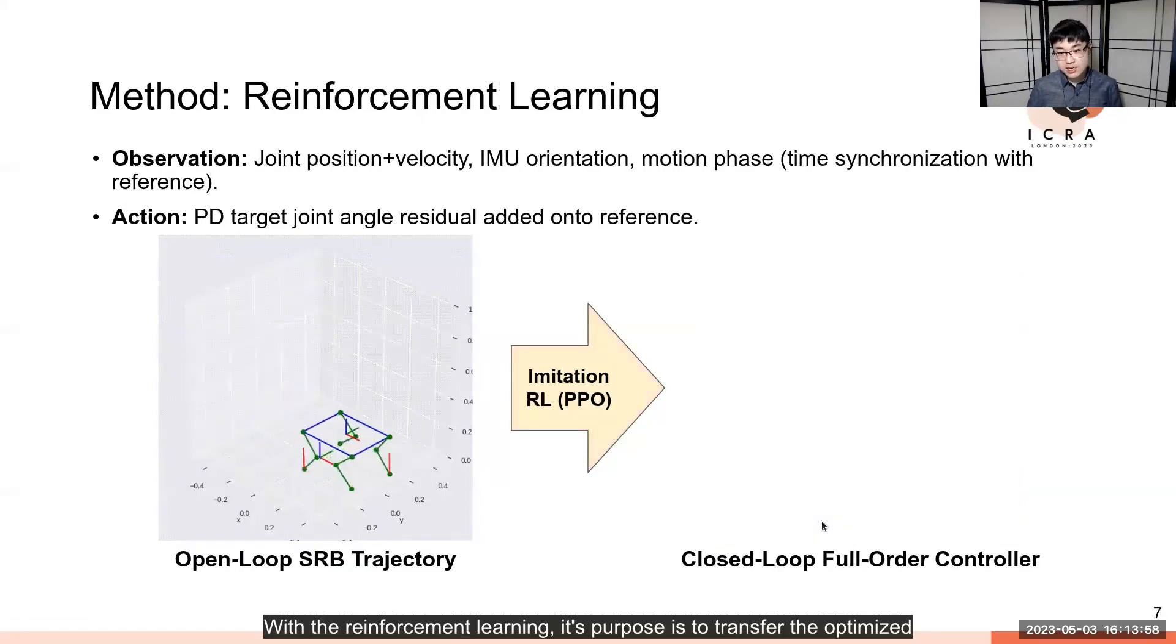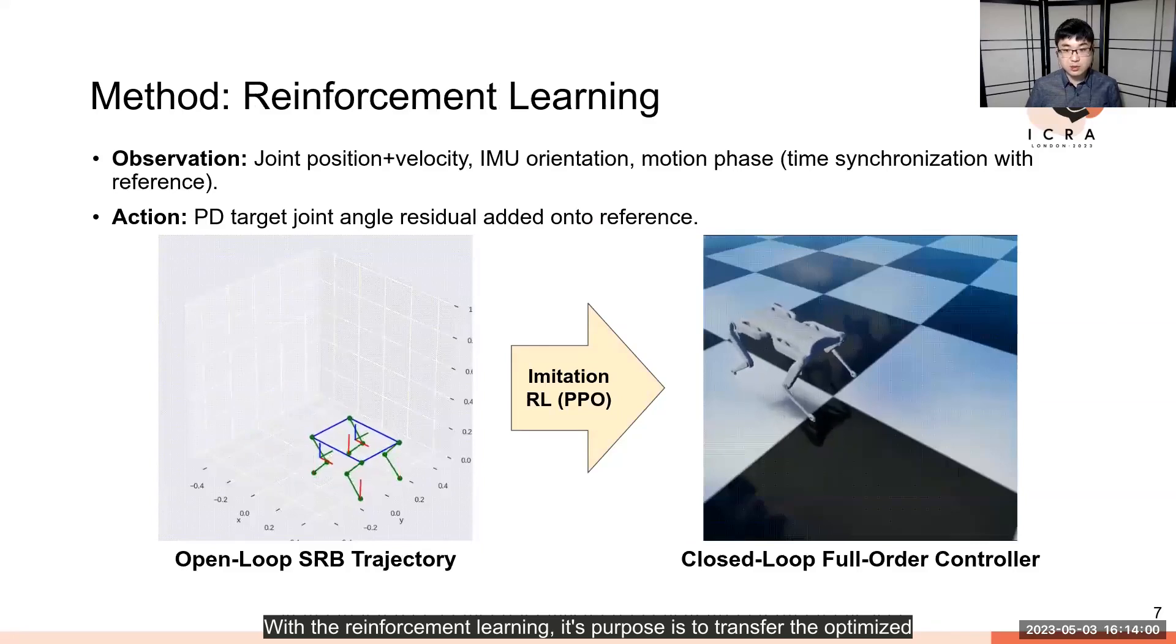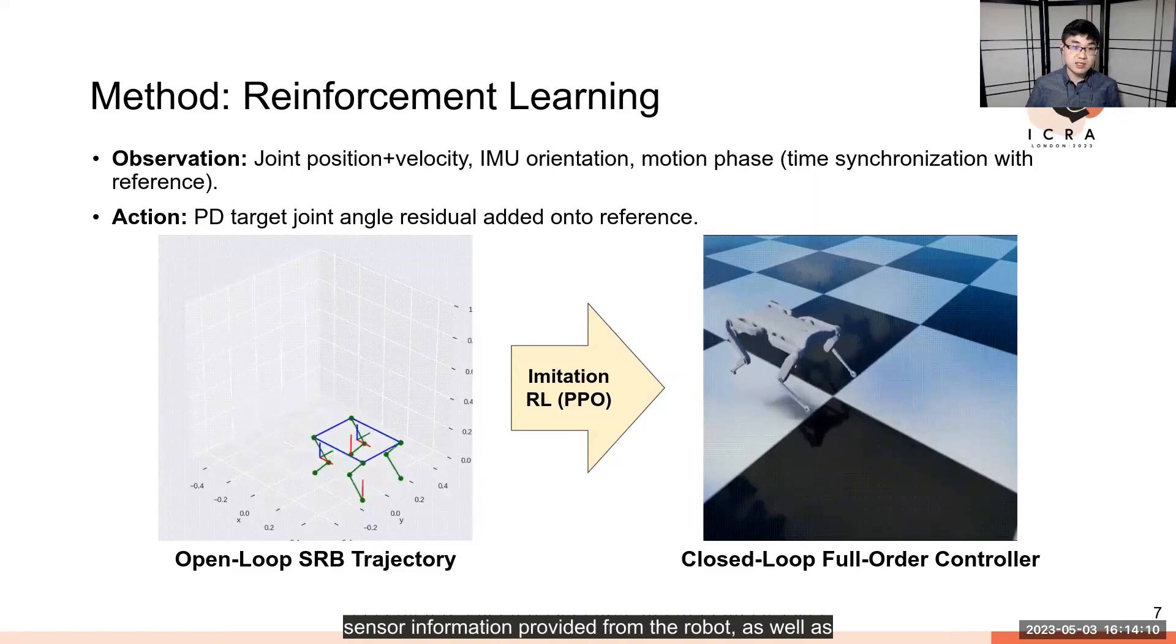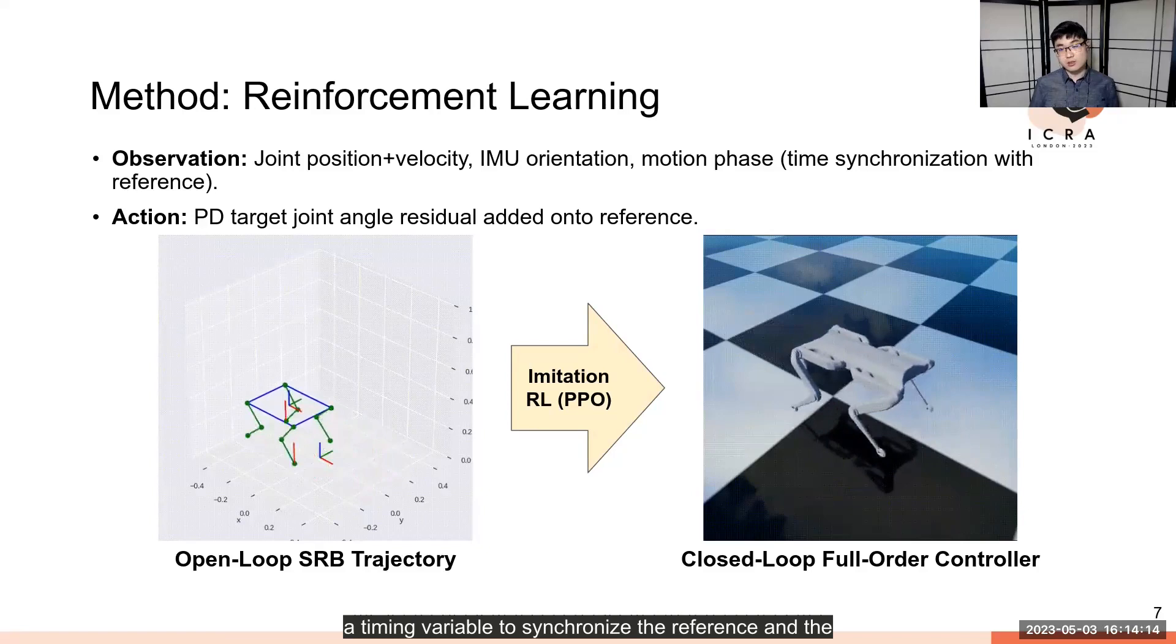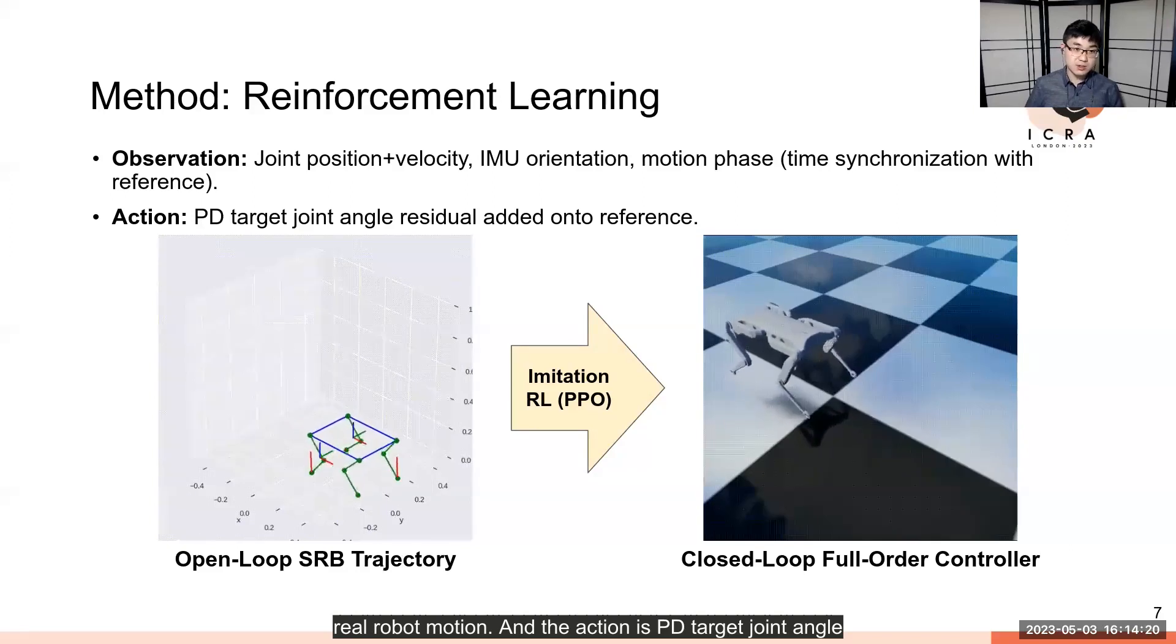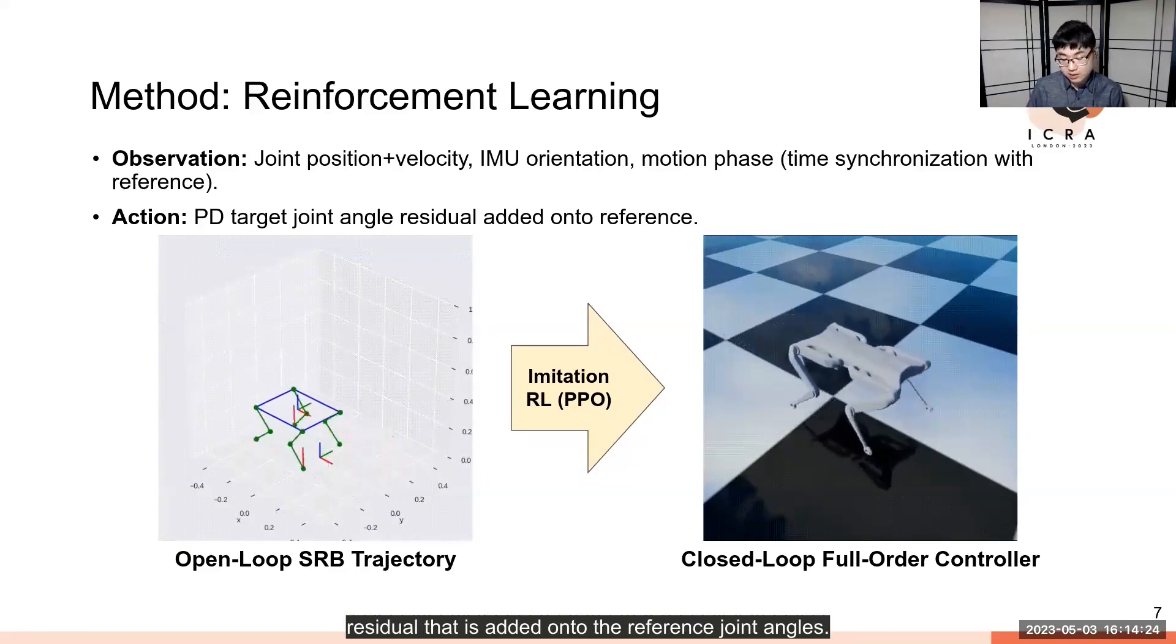With reinforcement learning, its purpose is to transfer the optimized motions to a realistic physics simulator. The RL observations are the sensor information provided from the robot, as well as a timing variable to synchronize the reference with real robot motion. The action is a PD target joint angle residual that is added onto the reference joint angles.